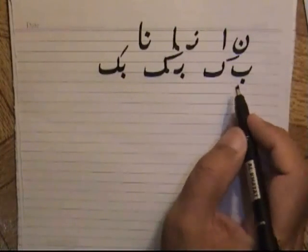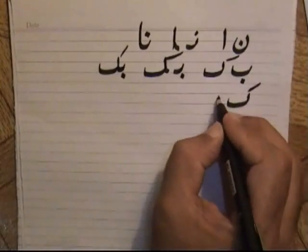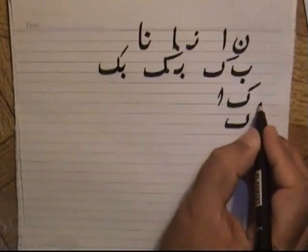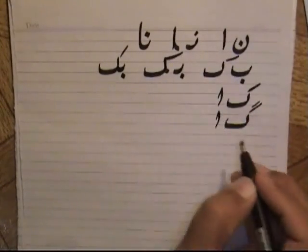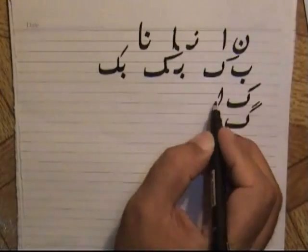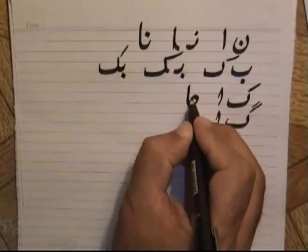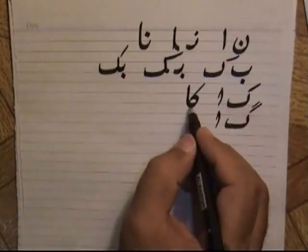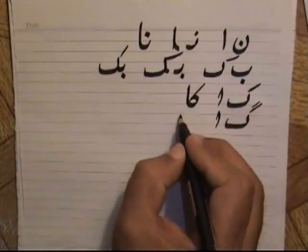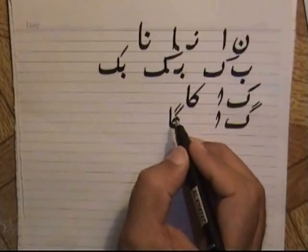There is one rule about kaaf and alif. If alif appears after kaaf, it will make the special sound kaaf-alif: 'ka'. We will write kaaf in a round form, and combined with alif it becomes kaaf-alif: 'ka'.